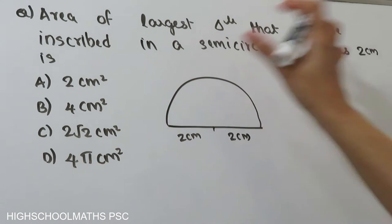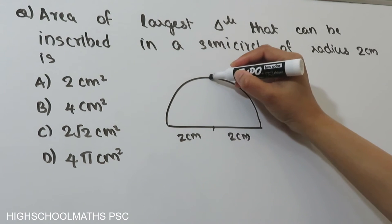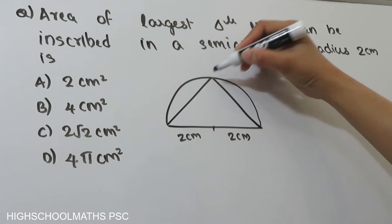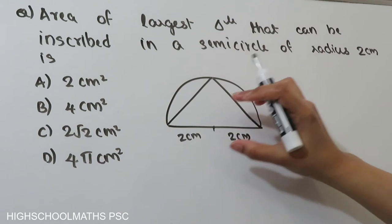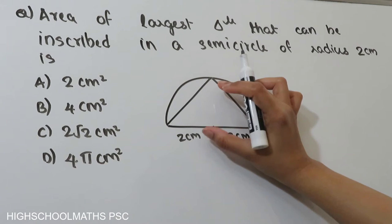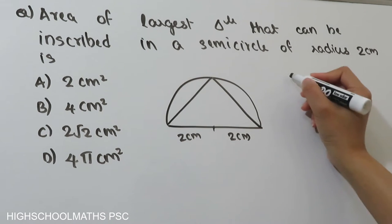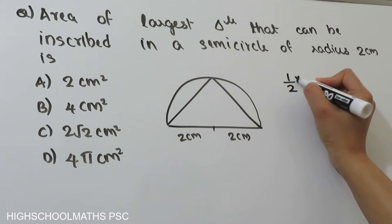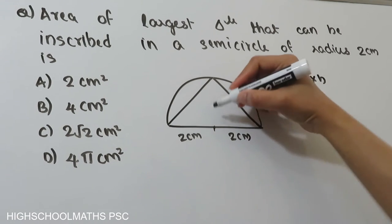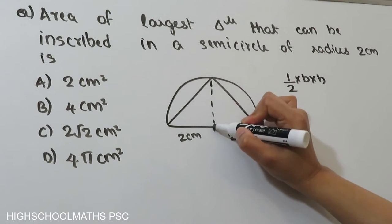We want the largest triangle. We will start from this center. This is the triangle. We will find the area of this triangle using the formula: half into base into height. This triangle sits inside the semicircle with its base as the diameter.